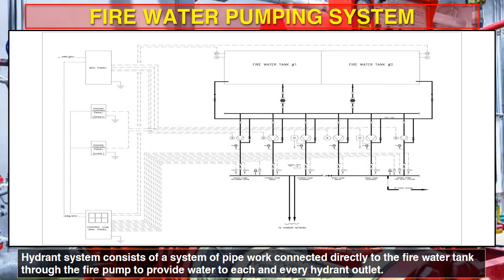We are now entering the core topic. The fire water pump house is the heart of the fire protection system because it pumps water to the pipe network so as to extinguish fire. From the drawing of the fire water pump house, you can clearly see there are two tanks, two main pumps, two diesel pumps, and two jockey pumps connected to the suction header. There is a common recirculation line connected to the top of the water storage tank, and a common discharge header distributed to the spray headers, hydrant lines, etc. There are also various panels like MCC panel, engine control panel, and control cum annunciation panel to control the operation of pumps.